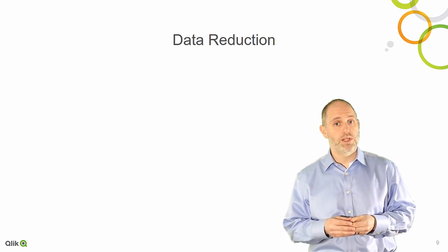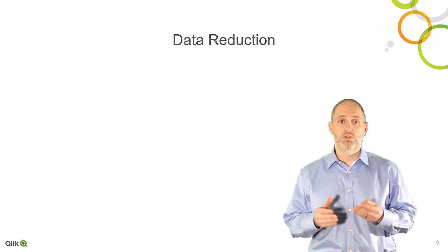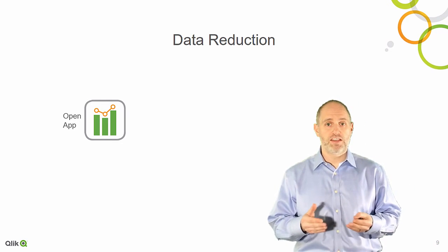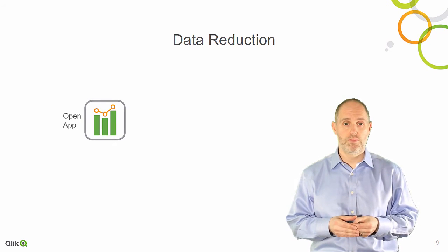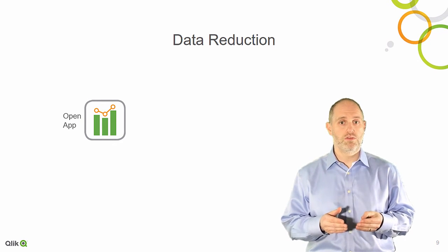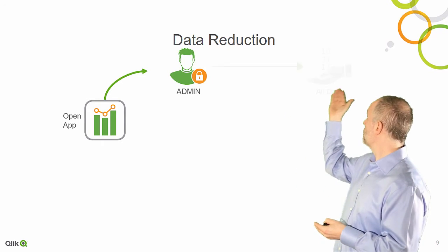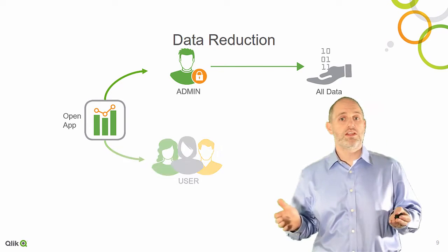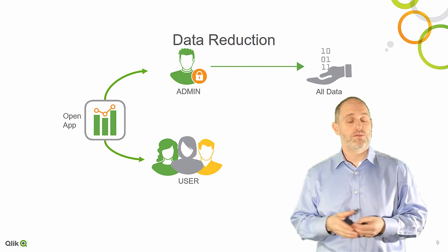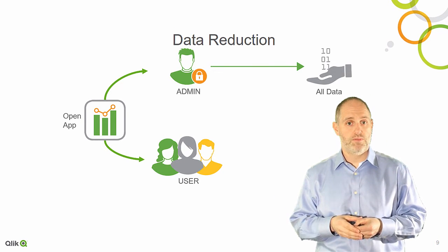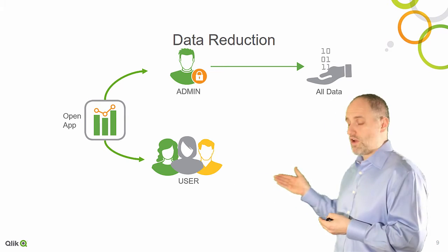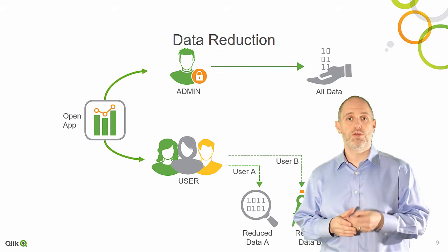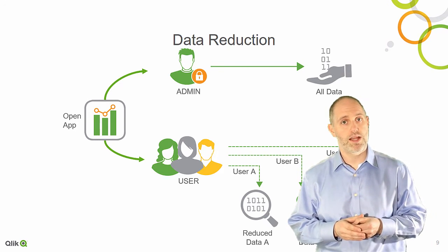Once the user has access to an application and opens it, their credentials are sent into the app. Upon opening, a check is made against a table called the Section Access Table. This table defines users as admins who have access to all of the data in an application, or users whose visibility to data is granted by a reduction field in the Section Access Table. As a result, individual users are able to see only the data they are allowed to see, even though the application may contain a complete set of records.